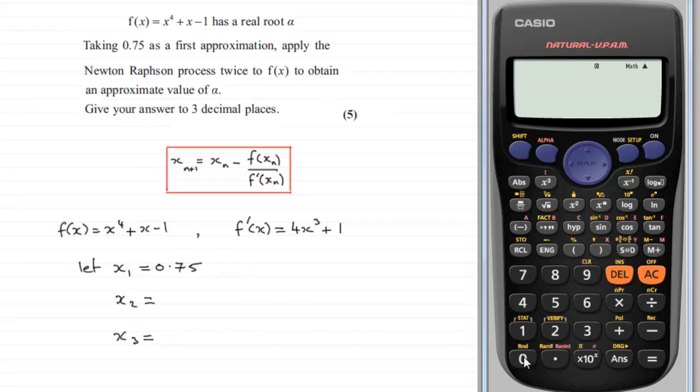What we do is we can just enter in our first approximation, 0.75 in this case. And press equals and that is stored then as the answer.